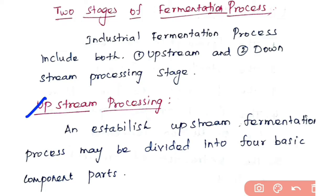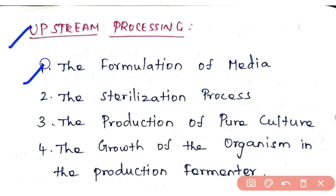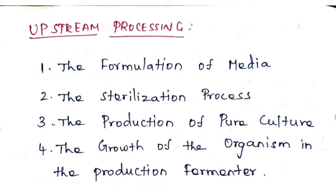Let's see the steps involved in upstream processing. An established upstream fermentation process is divided into four basic component parts: the first step is formulation of media, second is sterilization, third is production of pure culture, and fourth is growth of the organism in the production fermenter.